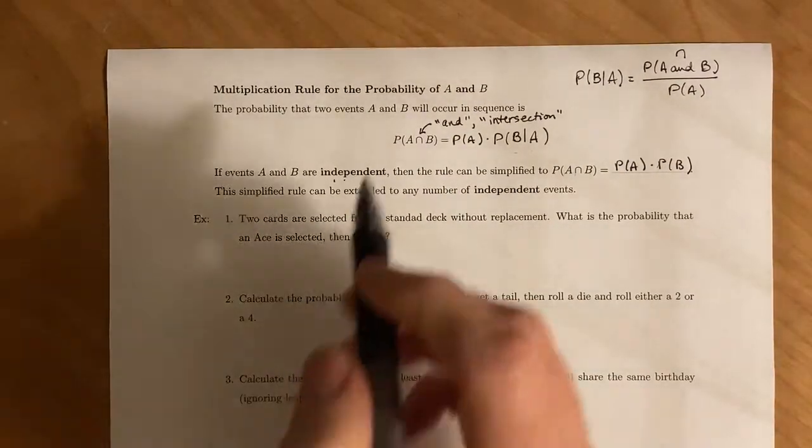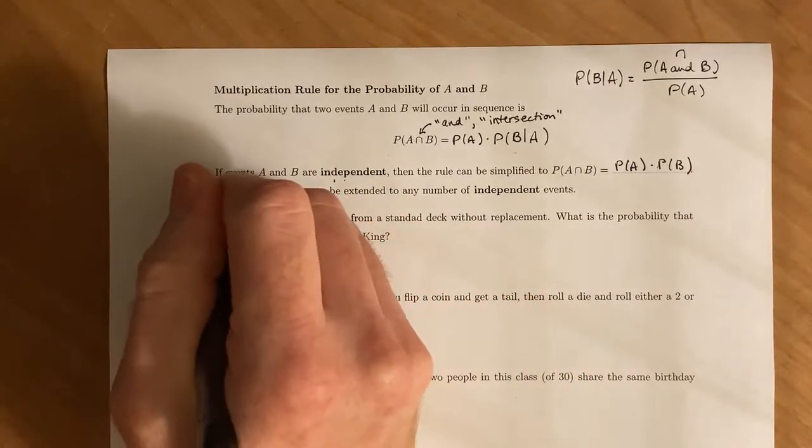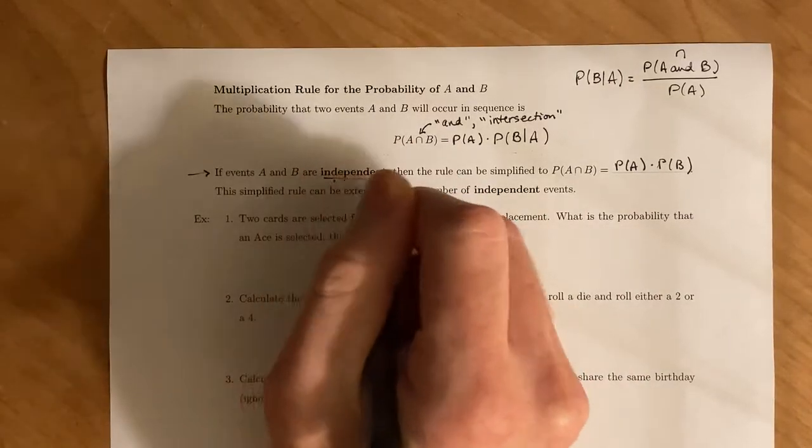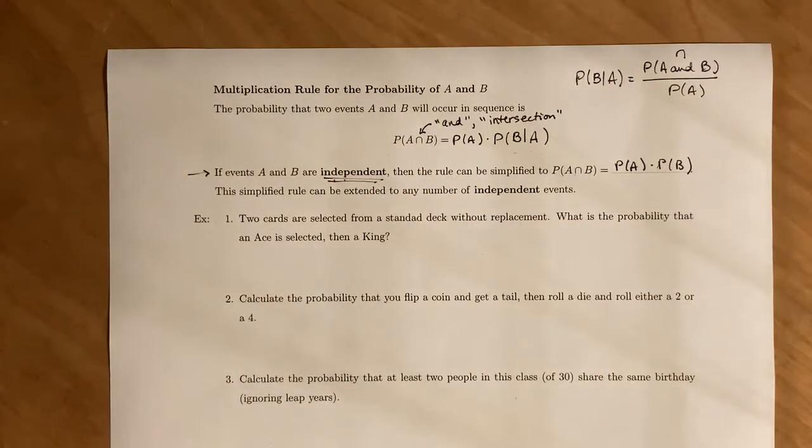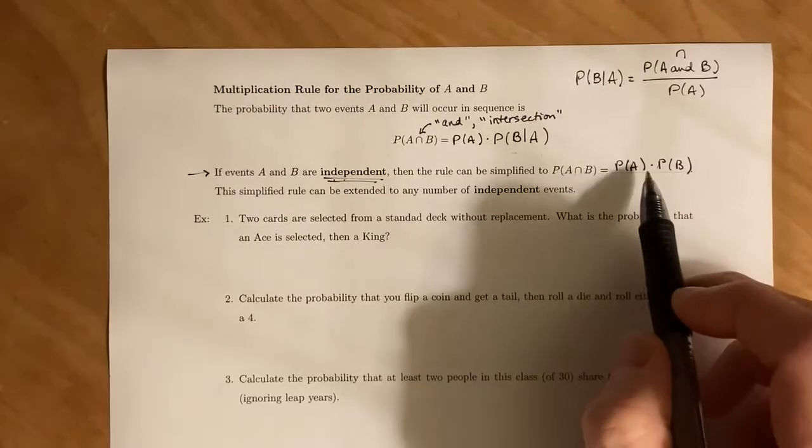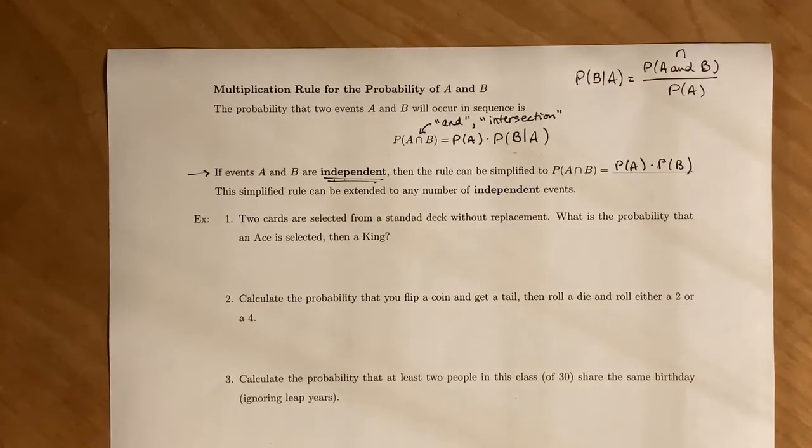But to be able to use this rule right here, we need to know that the events are independent to begin with, to be able to get a nice multiplication rule like that. And this simplified rule can be extended to any number of independent events. So if you have just, I don't know, 15 independent events, and you look at when all the events occur at the same time, if they're all independent, it's just going to break up as a multiplication of all the probabilities.